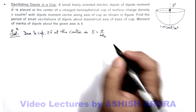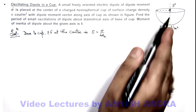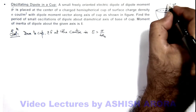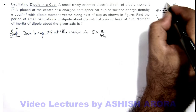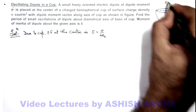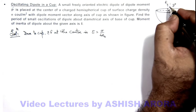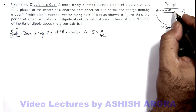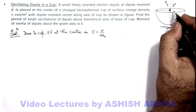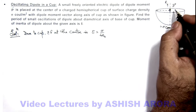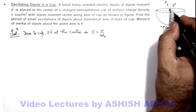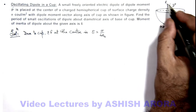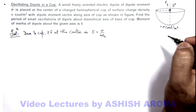In this electric field, as the dipole is placed here, the electric field is in the vertically upward direction and the dipole moment is also in the upward direction. So here we can see that the dipole will be in stable equilibrium.